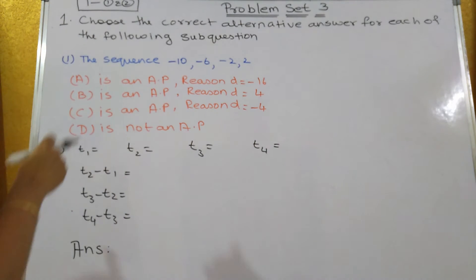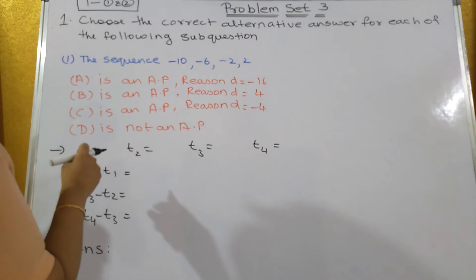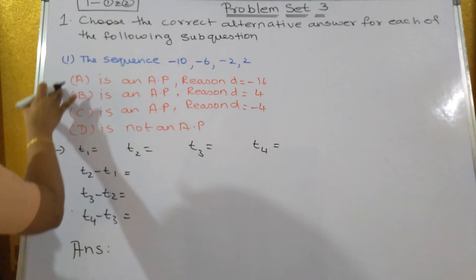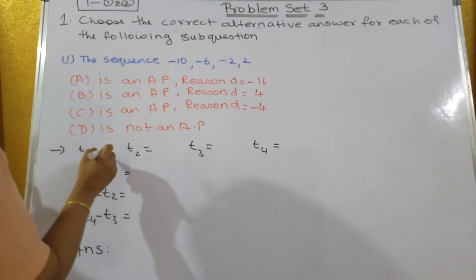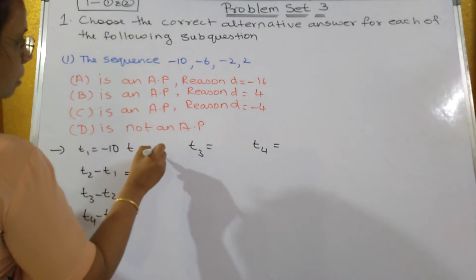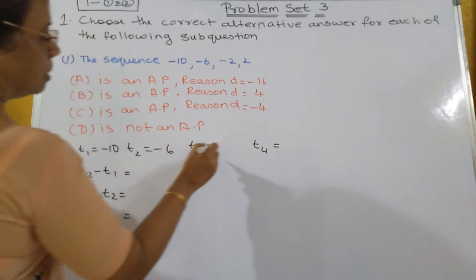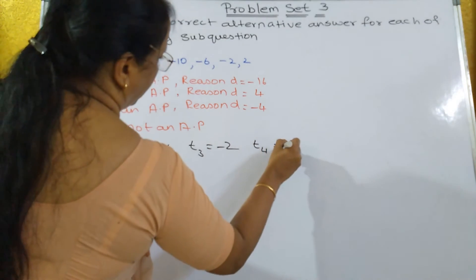So, the first one is what? The sequence is given: minus 10, minus 6, minus 2, 2. You have to find out the correct option out of this which is a correct answer. So, T1 over here is minus 10, T2 is minus 6, T3 is minus 2, and T4 is 2.